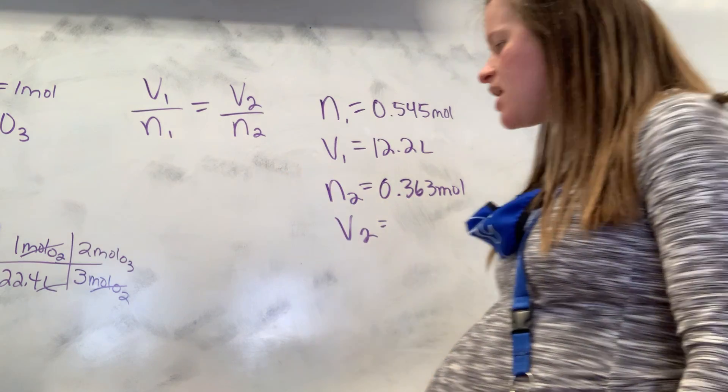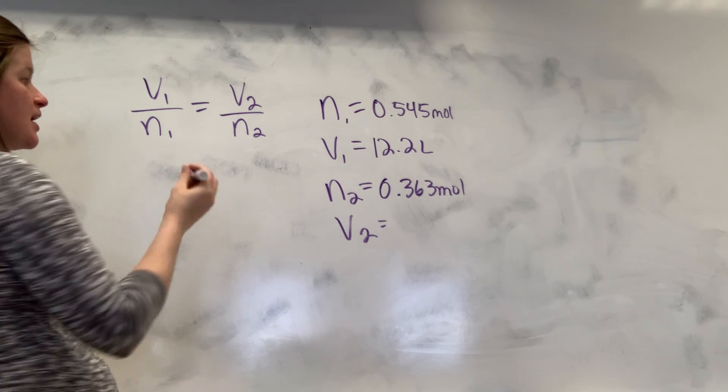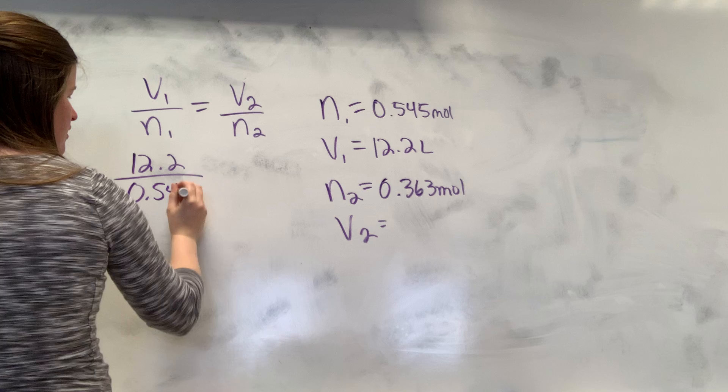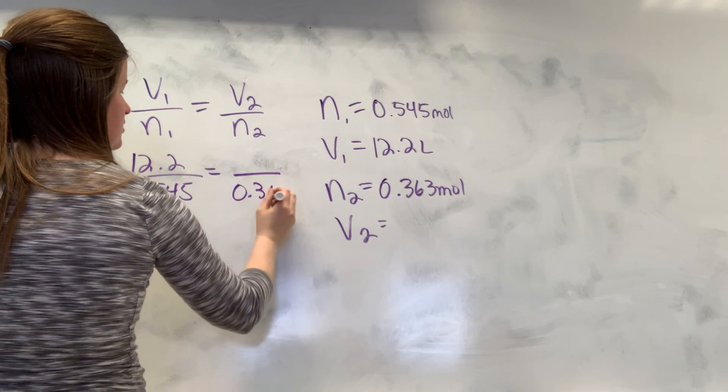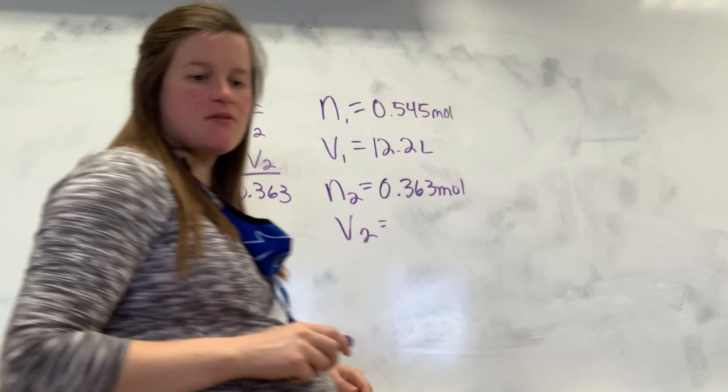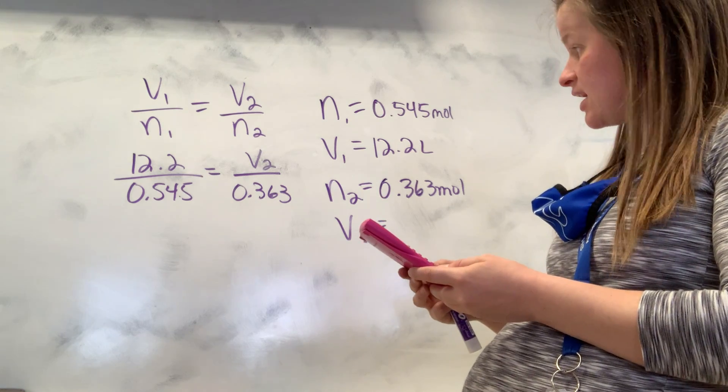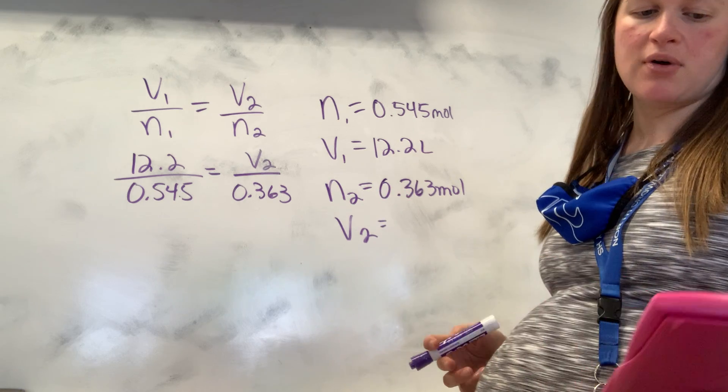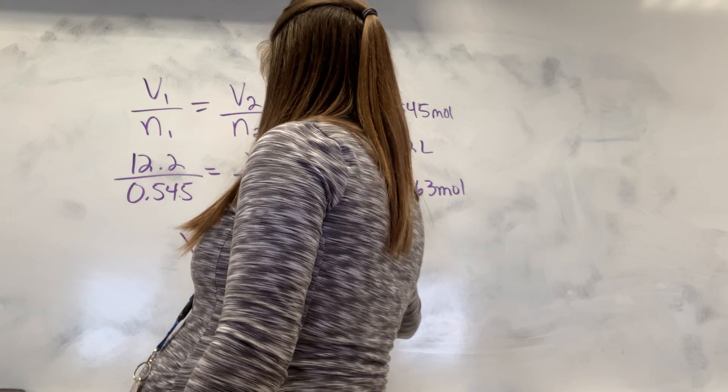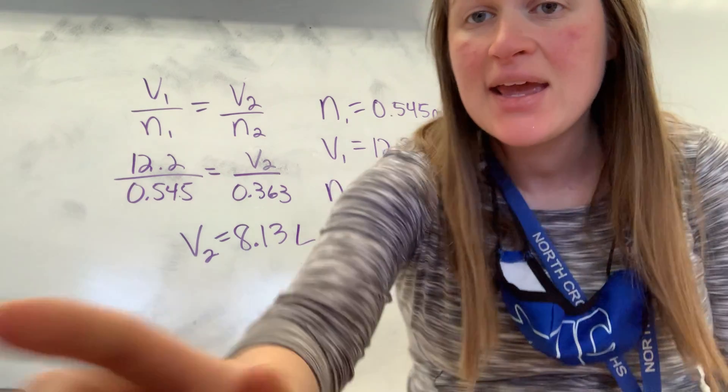And you would plug in and solve the exact same way that we did the last problem. And so I would take my 12.2 over my 0.545 equals, and then I have my 0.363, and then I'm solving for V2. So then I'd first divide, and then I'm going to multiply. First divide, and then multiply. So 12.2 divided by 0.545 times 0.363 equals 8.13. Okay, and that's liters. So hopefully that's making sense, and I'm at 10 minutes. Dang.